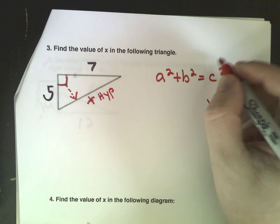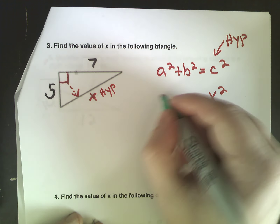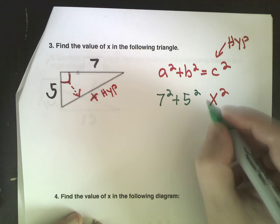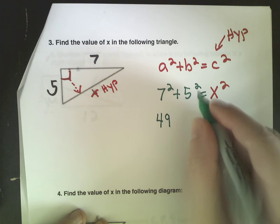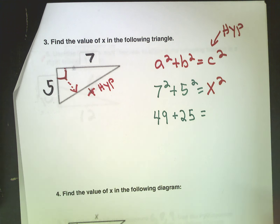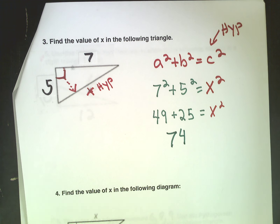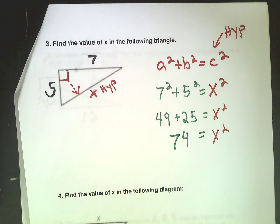Okay, same thing — I'm going to move a little faster. Looking at this problem, the right angle is here, and the hypotenuse is always across from the right angle. So in this case, x is my hypotenuse. Using our formula: a squared plus b squared equals c squared. I always put in c first — the c in this case is x, the hypotenuse. So the equation becomes: 7 squared plus 5 squared equals x squared. 7 times 7 gives me 49, and 5 times 5 gives me 25. X squared stays as x squared.